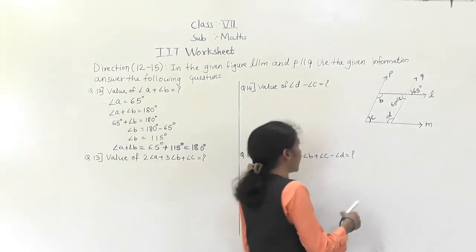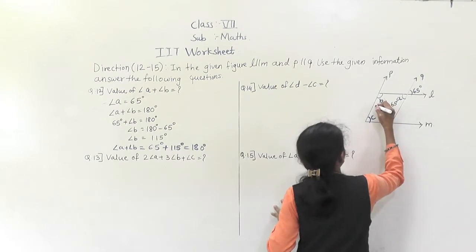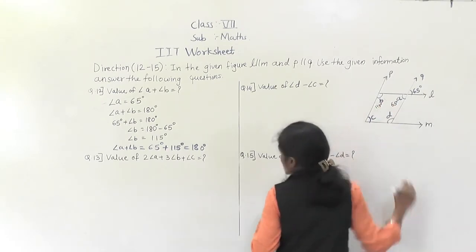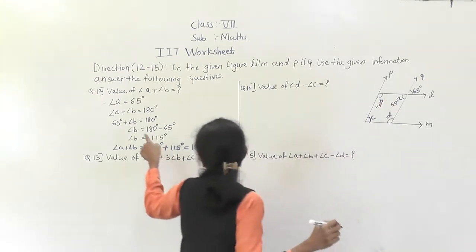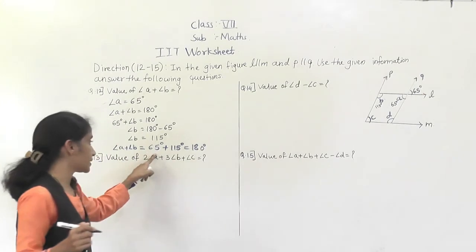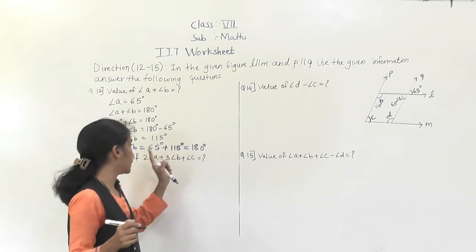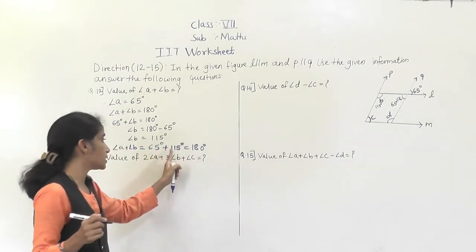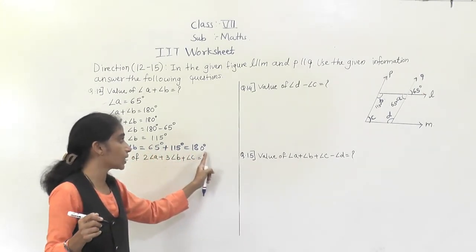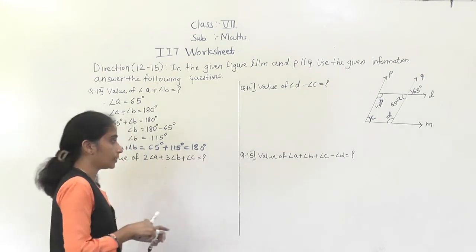Angle B is 115 degrees. So for question number 12, angle A plus angle B is equal to 180 degrees.